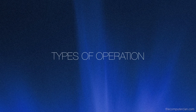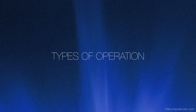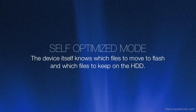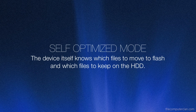How exactly does this work? There are two types of modes that a solid-state hybrid drive typically functions in. The first one is called self-optimized mode. The device itself, without relying on drivers or any other software, knows which files to move to the flash and which to keep on the hard disk drive. It can tell what files are accessed more frequently and will move them accordingly.